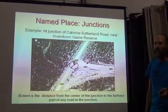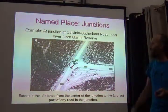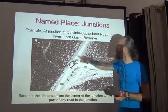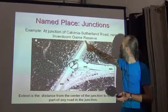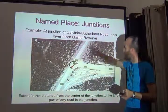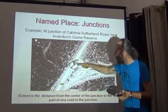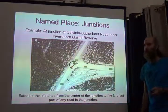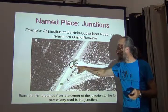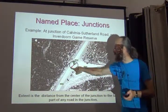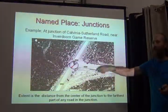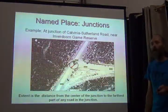A junction is very specific and very small. The center is just where the roads come together, and the extent covers all the parts within that intersection. That makes a junction a very precise reference point for a geo-reference.